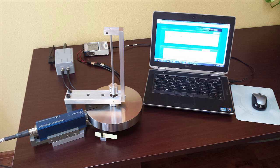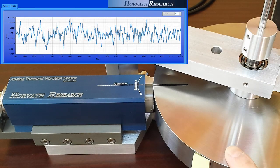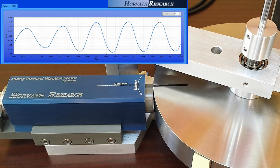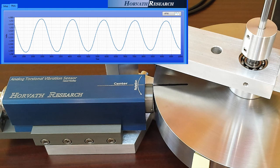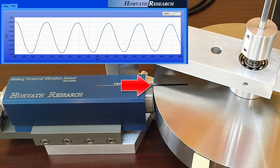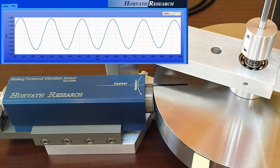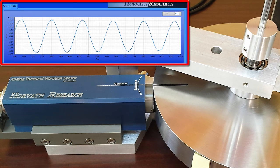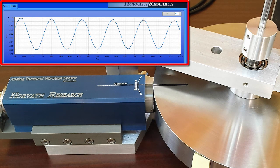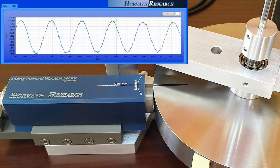The analog torsional vibration sensor is positioned radially with 20 mil air gap. The manual excitation creates torsional vibration that dies out in 25 seconds. Initially this torsional vibration can be observed on the video, but when the amplitude drops the vibration can be seen only on the plot showing the signal from the analog torsional vibration sensor.